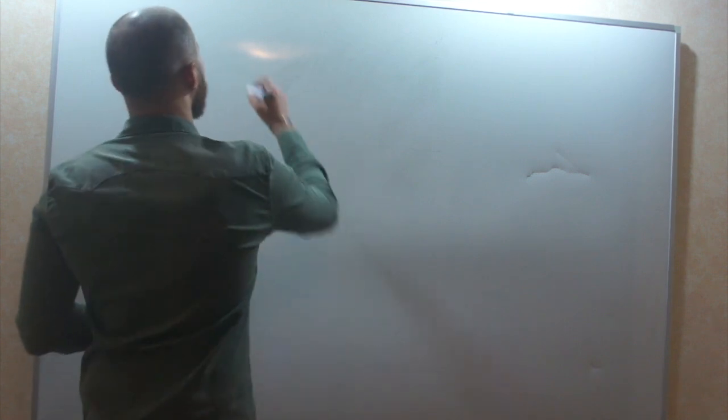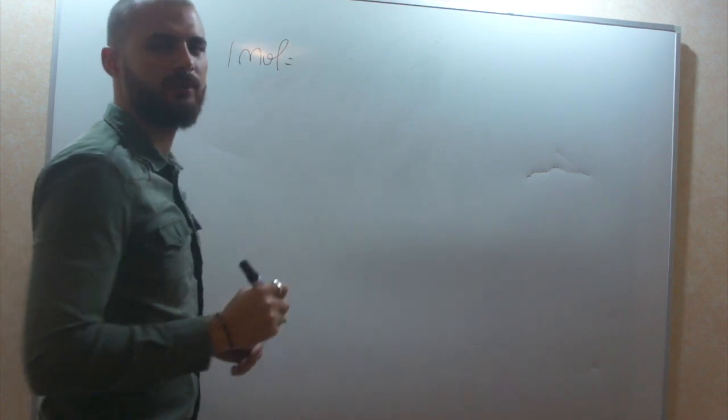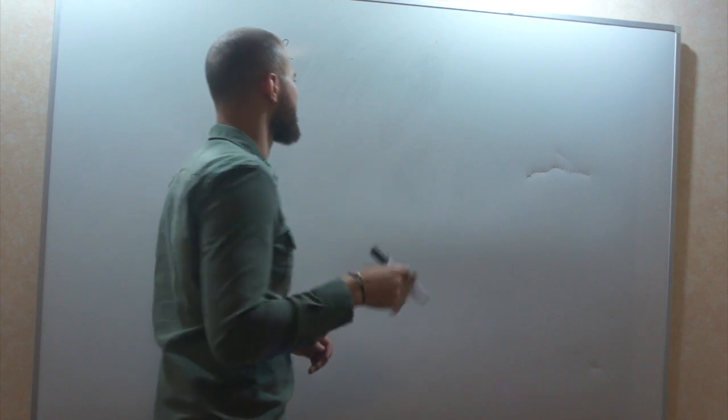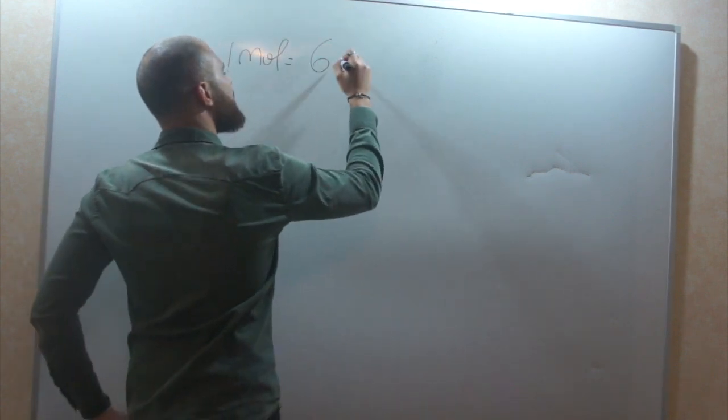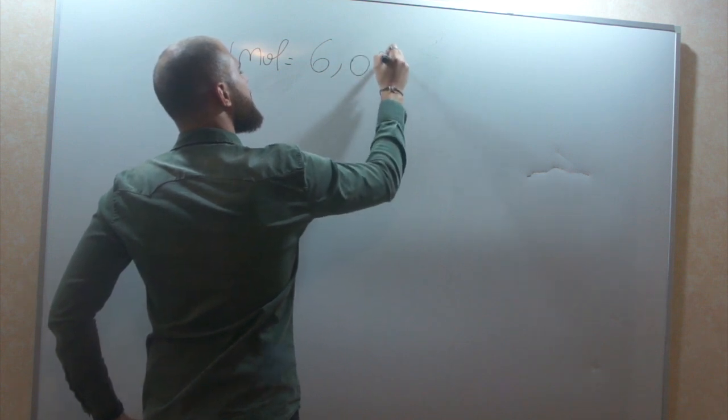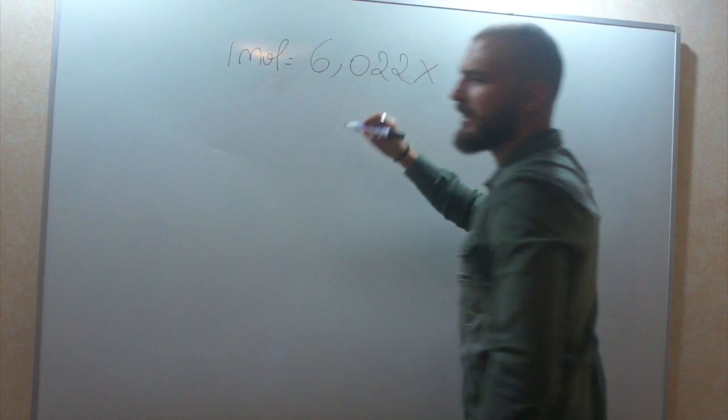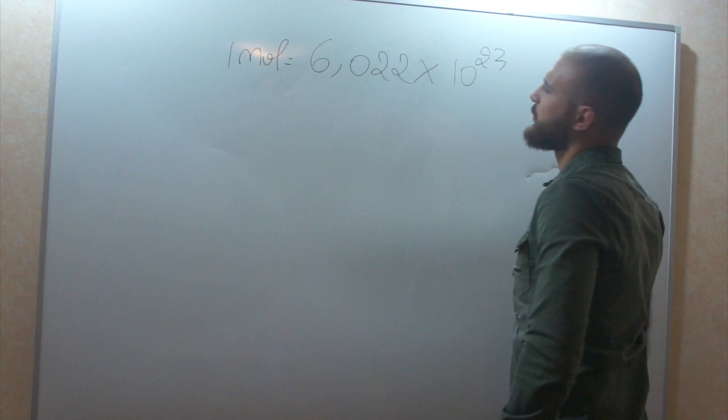What's a mole? One mole. It's called the Avogadro number. It's like an Italian chemist that invented it, or physicist, I don't remember. It's simply 6.022 multiplied by 10 power of 23.